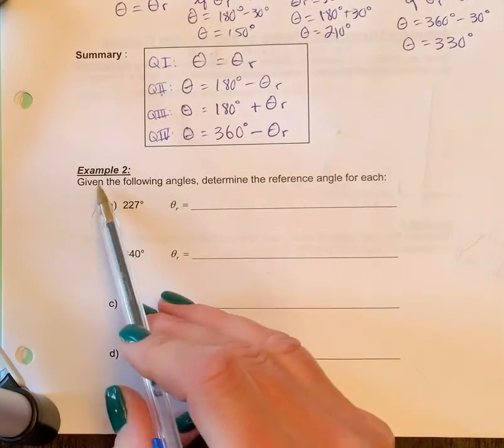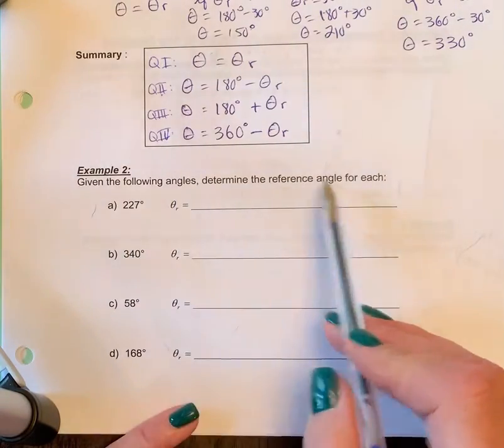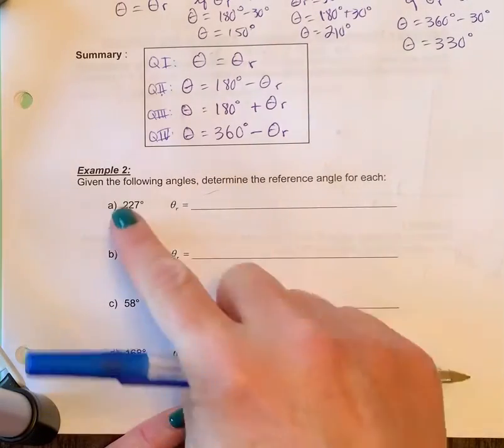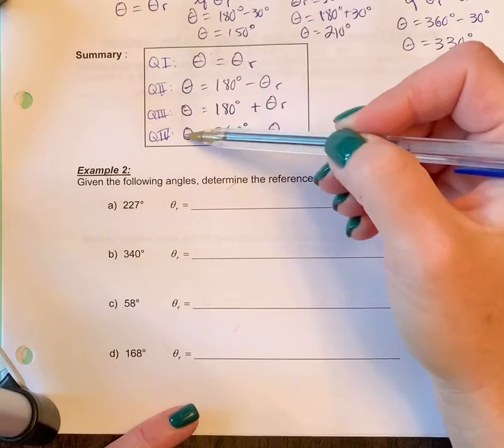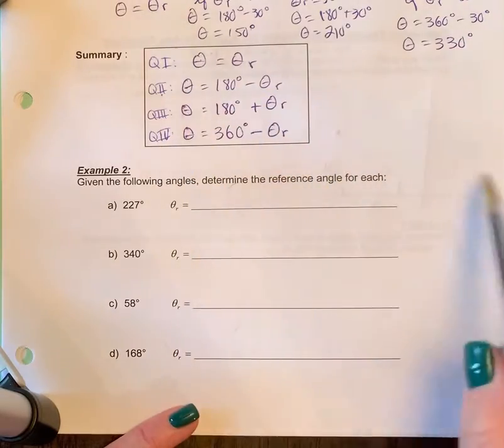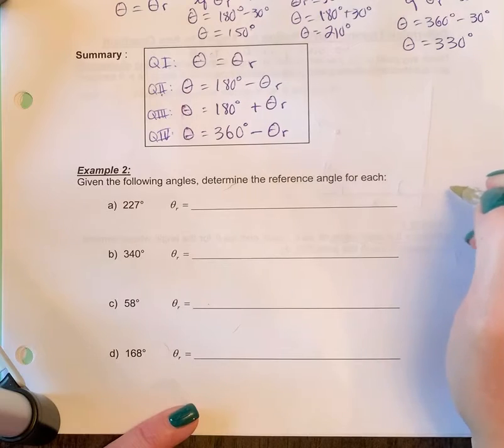All right, we're going to look at example two. Given the following angles, determine the reference angle for each. These are angles in standard position, so it's as if we're given the theta values. This is still the general rule, but I find when you're given theta, drawing a little picture is probably the best way to go about it.